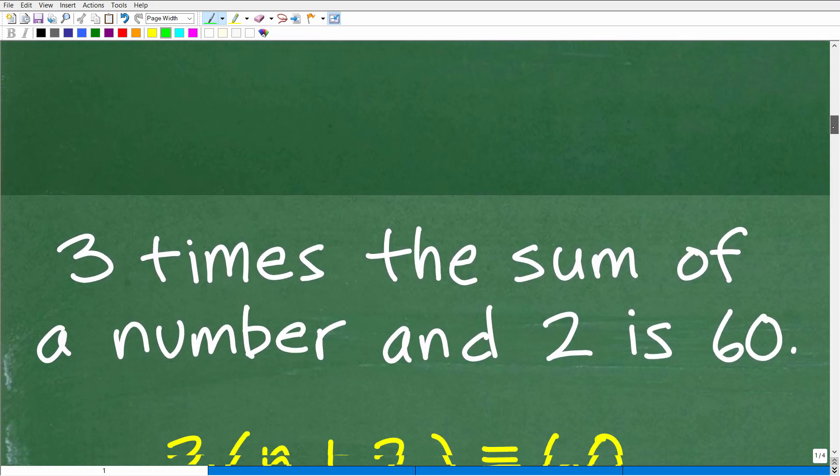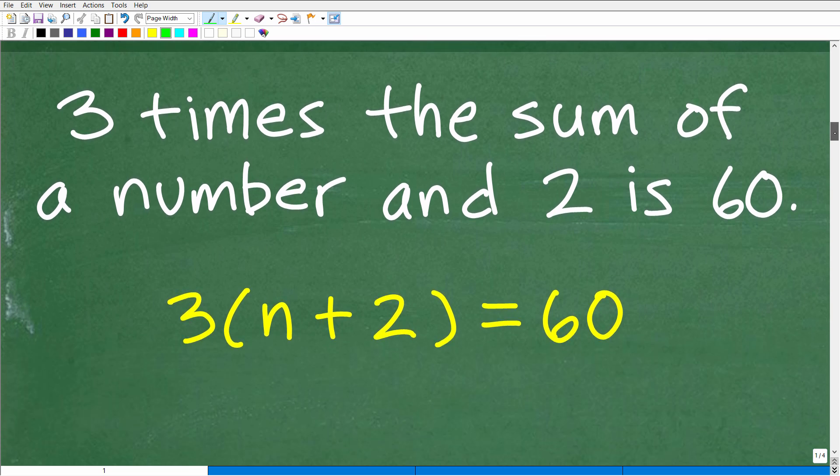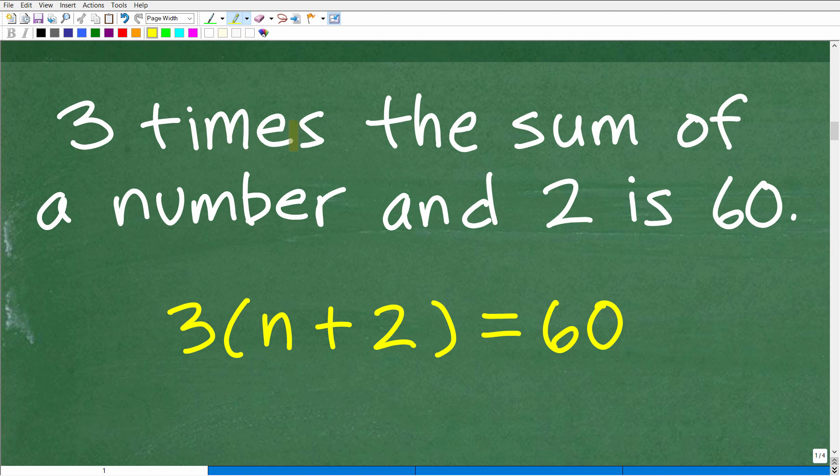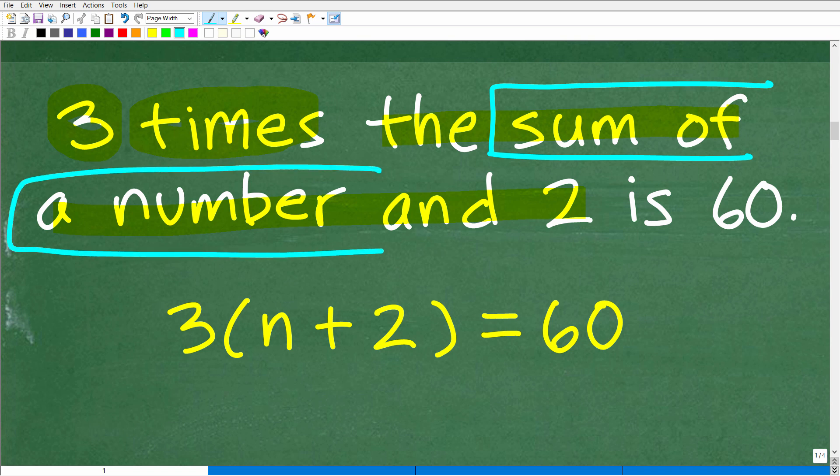And the next step is going to be actually to build an equation here. All right, so three times the sum of a number. So here, we know we're going to have to multiply three times something. What are we going to multiply? Well, the sum of a number and two. So I'm going to start with this part. The sum of a number and two, we can represent this way. Now, n is going to be equal to our number. And the sum of a number and two, we can write it as n plus two. This is the sum of a number and two. Again, remember, I'm using parentheses.